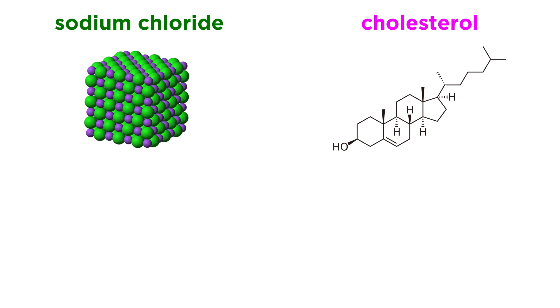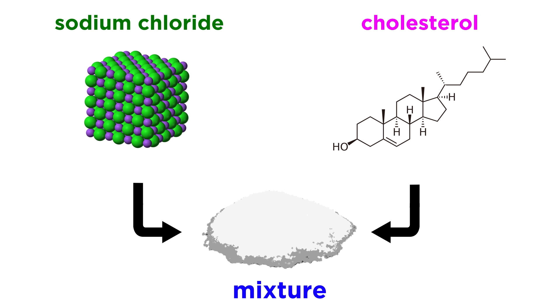Let's say we have a mixture of sodium chloride and cholesterol. These are both white, crystalline solids, so if mixed together, it may seem impossible to get them separated again. But in fact, we can use their physical properties to separate them with ease. Sodium chloride is an ionic compound that is water-soluble.